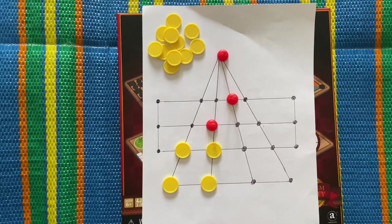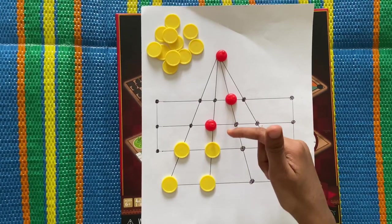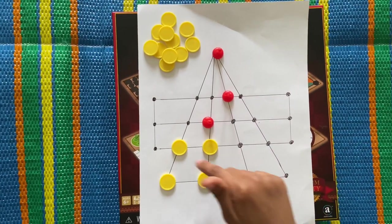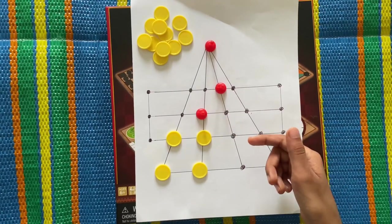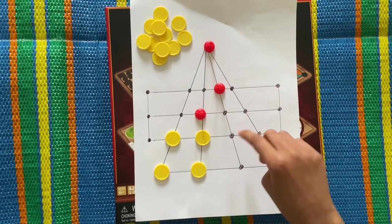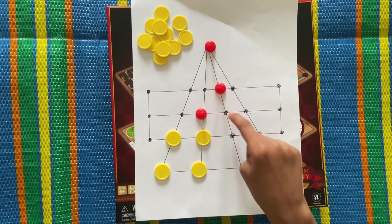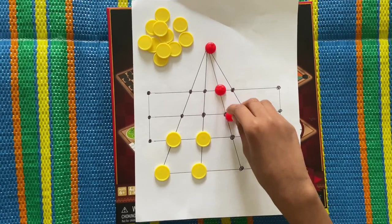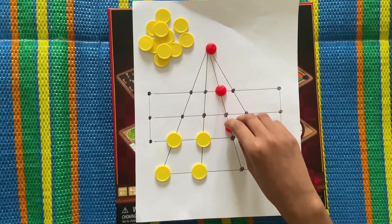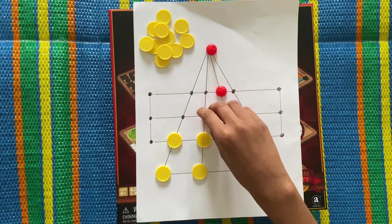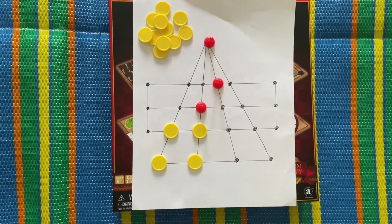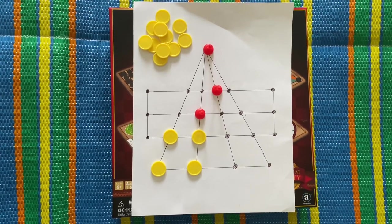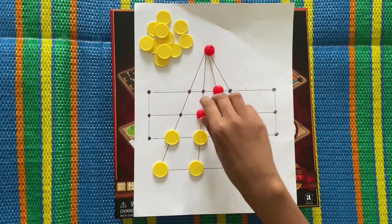And one more thing, the sheep and the tiger, they cannot move where there are not lines. So they can only move where there are lines. Like they can't move like that, they can only move like this and this. Okay, the next move. Mr. Tiger, what you're gonna do? You go in here.